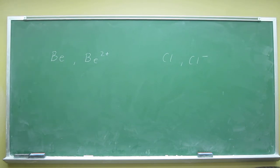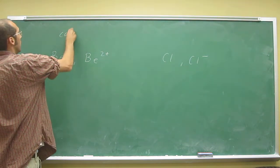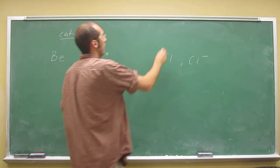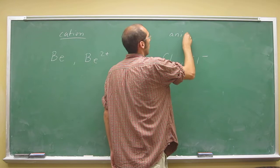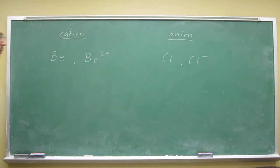So in this case, we've got a cation being formed from its parent atom, and here we've got an anion being formed from its parent atom. So remember what we just discussed.